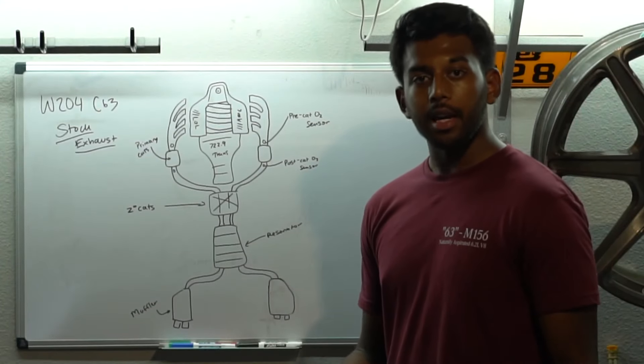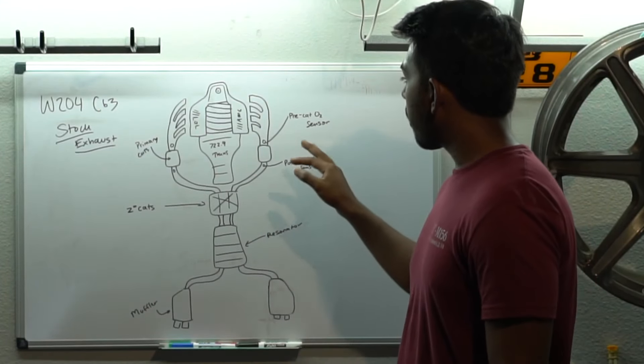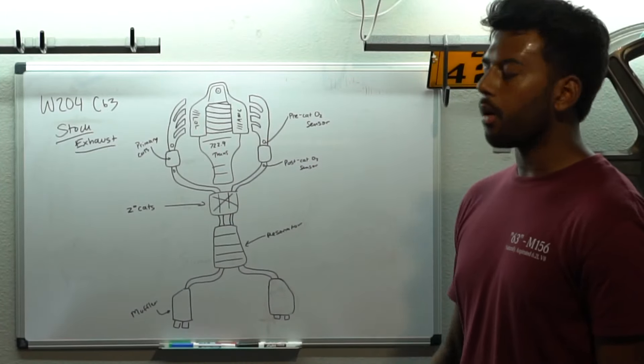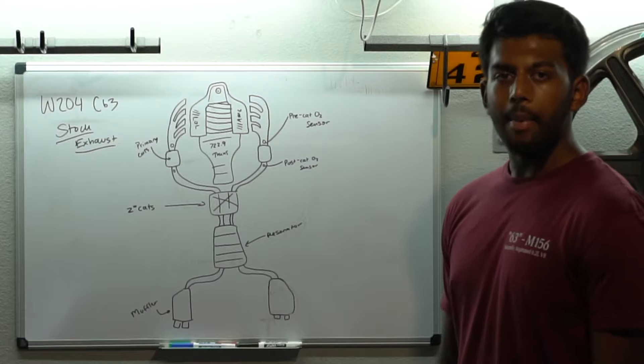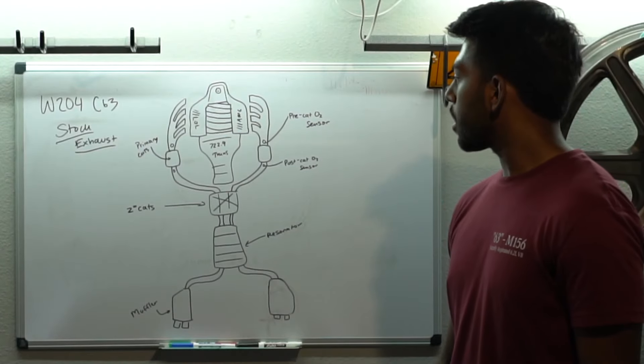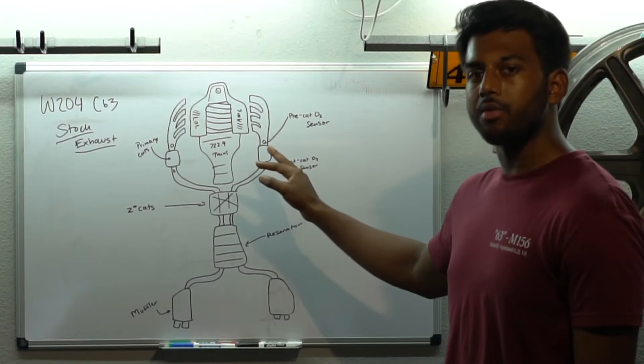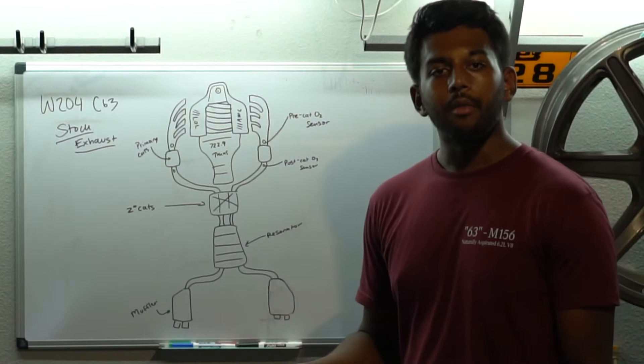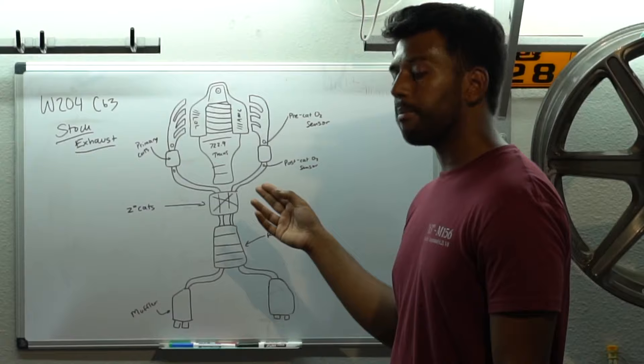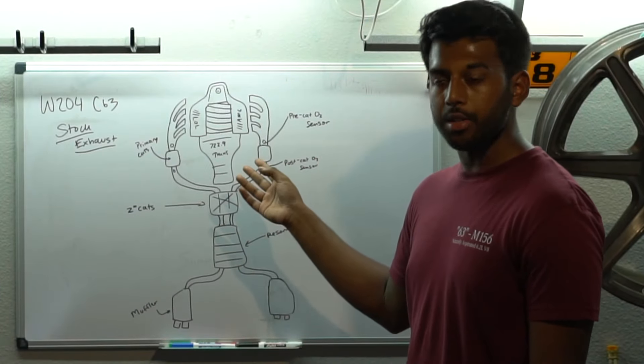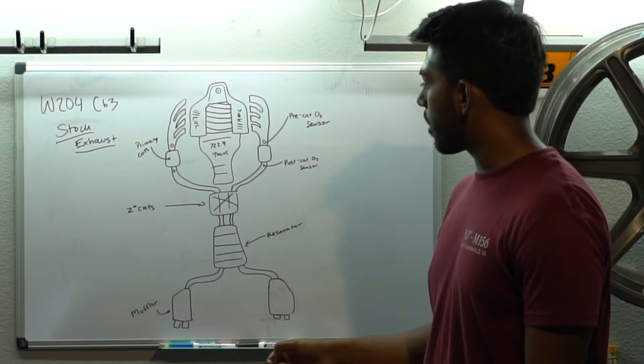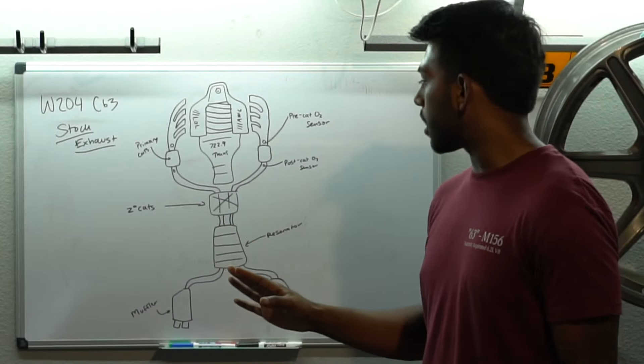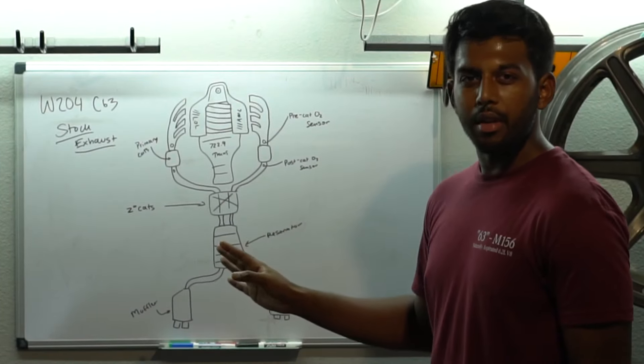Okay, so the stock exhaust. First up we have the stock headers, which are pretty restrictive for the M156, which is necessary for emissions and whatnot, passing regulations in different countries. Then we have attached to the very base of them are the primary catalytic converters. Now around the primary catalytic converters, you have your pre and post catalytic converter O2 sensors. You can see them kind of roughly over here. Now this drawing is by no means, you know, exactly precise, but it gives you kind of a rough idea of where things are.